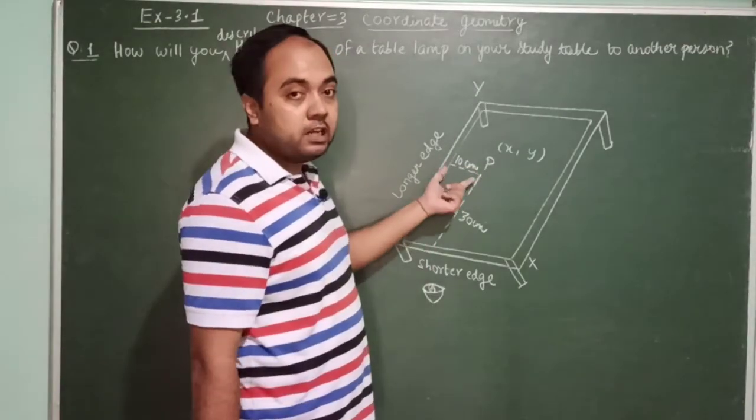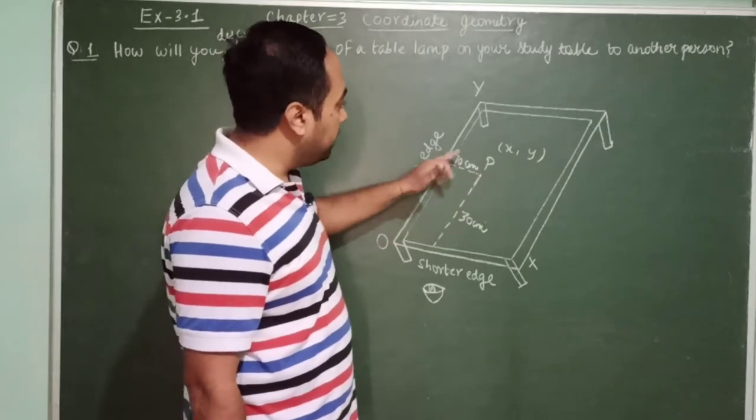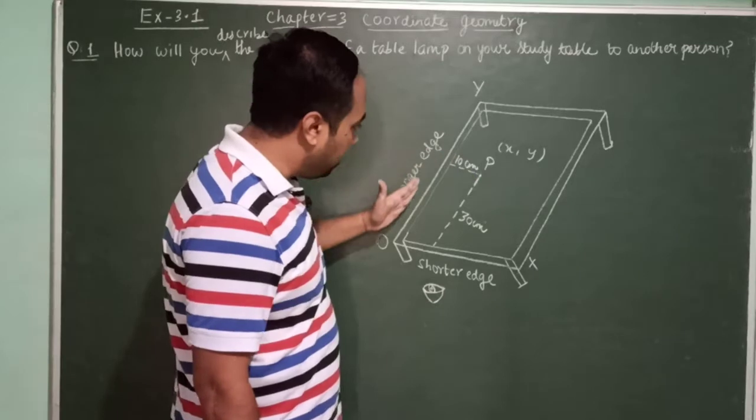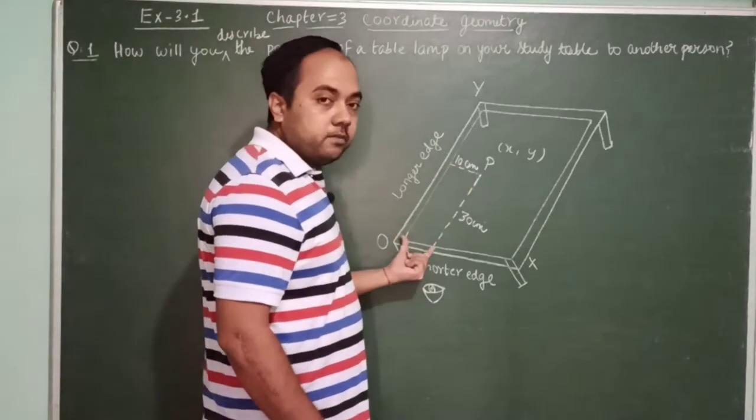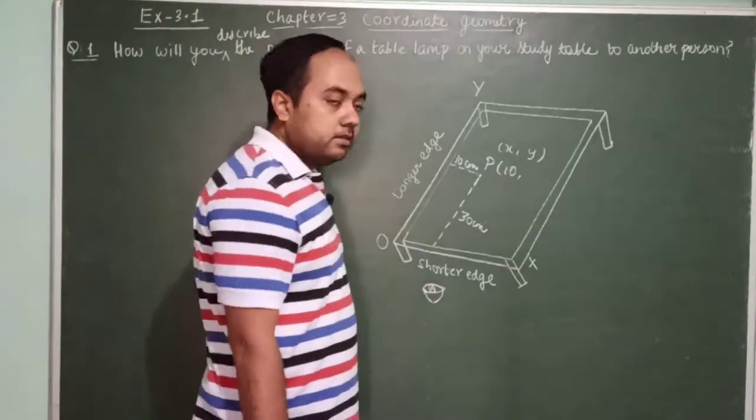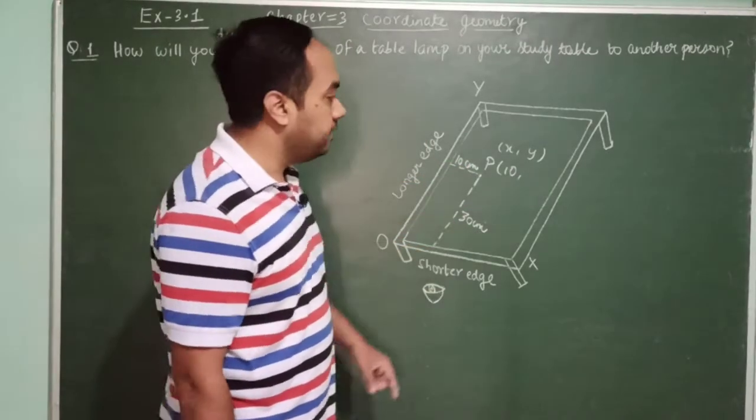The x-coordinate is the perpendicular drawn on the y-axis measured along the x-axis. So here, x is 10 and y is 30.